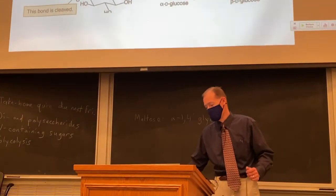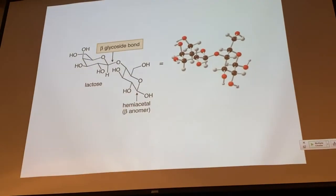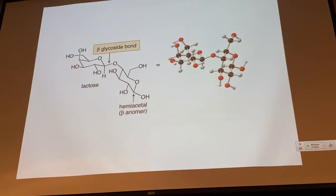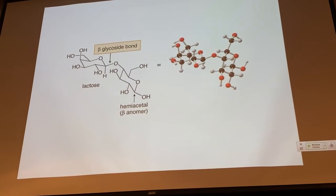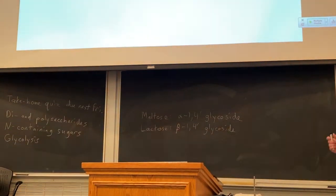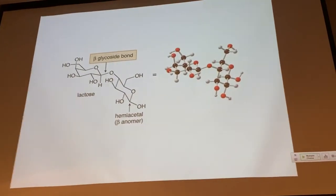Let's look at another disaccharide — lactose. Lactose is present in milk and other dairy products. There are two differences between lactose and maltose. First, lactose has a beta-glycoside bond — it is connecting carbon-1 of the sugar involved in the glycoside with carbon-4' in the other sugar, so it is a beta-1,4' glycoside rather than alpha-1,4'.